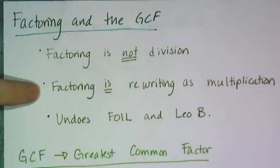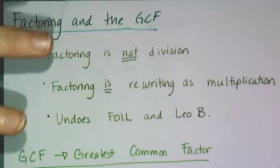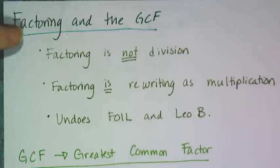What factoring means is to rewrite as a multiplication. So it's not division, it's rewriting as a multiplication. So when I factor 6, I get 2 times 3. They both have the same value, one's simplified and one's not.